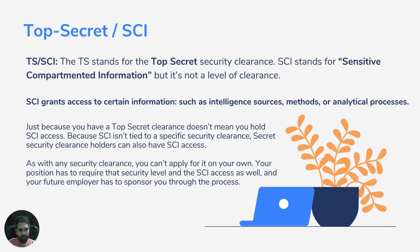SCI grants access to certain information such as intelligence sources, methods, or analytical processes. It is not a different kind of security clearance — it is just authority to access additional information. SCI is not specific to any one security clearance; SCI can be combined with Secret or Confidential as well, depending on the need of the project.